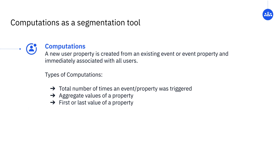The second type of segmentation tool we'll talk about is called computations. A computation, also called a computed property, is a way of quickly creating a new user property from an existing event or event property. Computations are great for situations where you want to look at something like the total number of times an event was triggered, the aggregate value of a property, or the first or last value of a property.